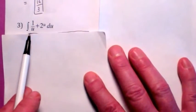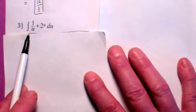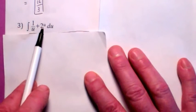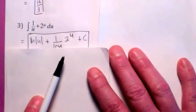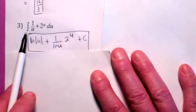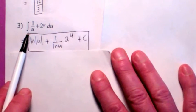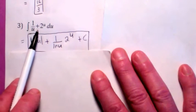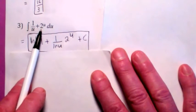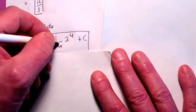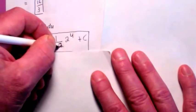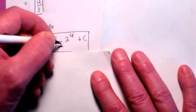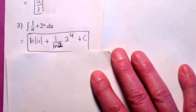The most general antiderivative, or the indefinite integral, of 1 over u plus 2 to the u du: you get ln of absolute value of u plus 1 over ln 2 times 2 to the u plus c.